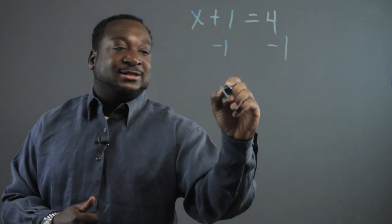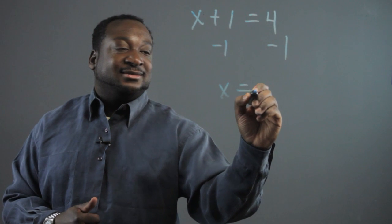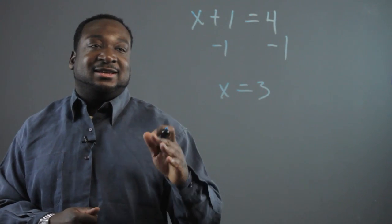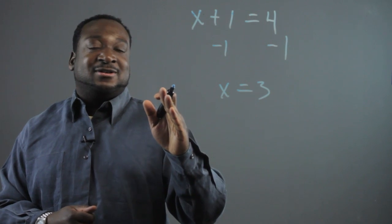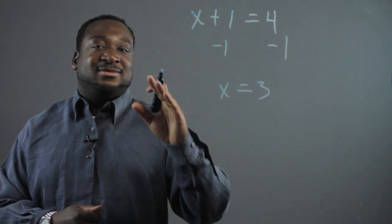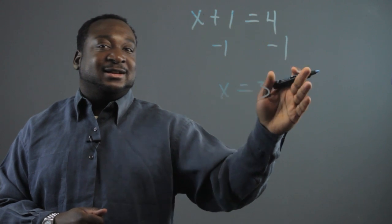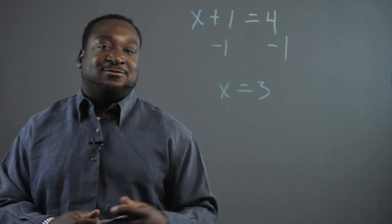So of course, x equals 3. You know, that's just logic. If one part equals another part, then one part minus 1 is, of course, going to equal to the other side minus 1.